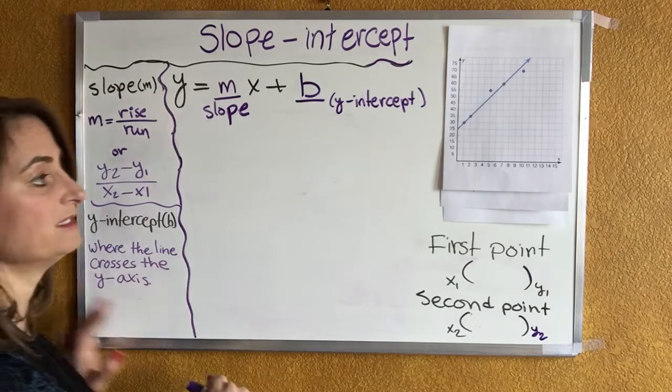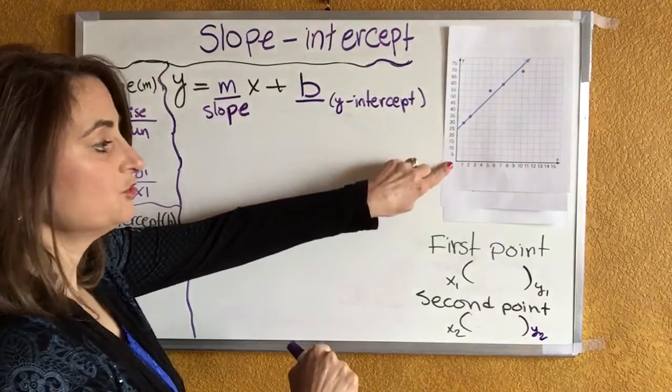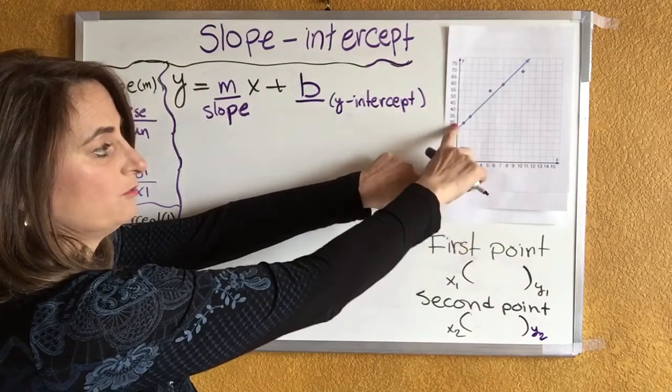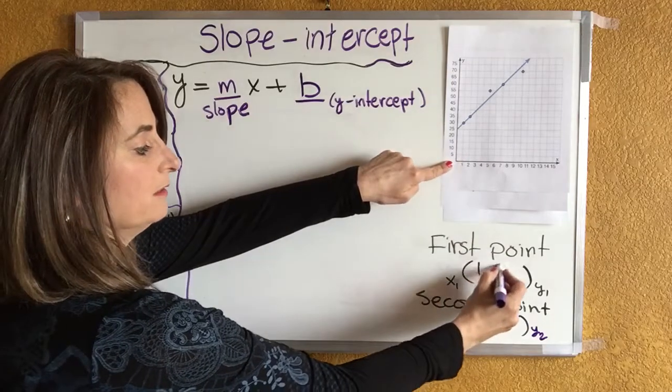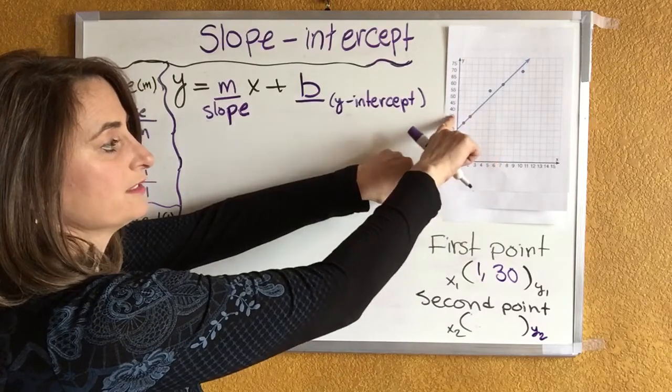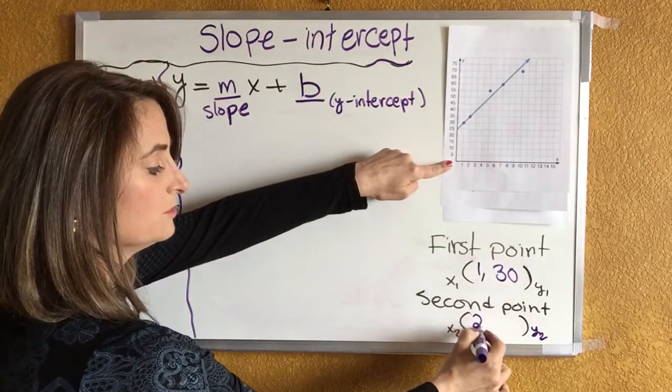So let's do this step by step. I need to choose my two dots. My first dot will be this first one where x is 1 and y is 30, so I'm going to put 1 and 30 for my first point. My second point is going to be 2 for the x and 35 for the y.